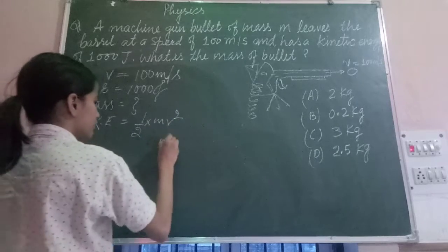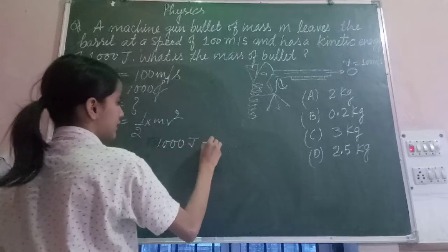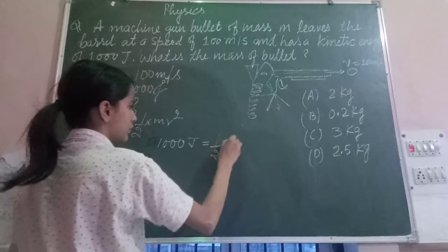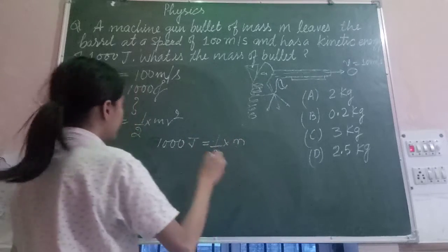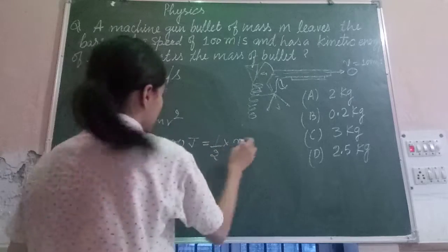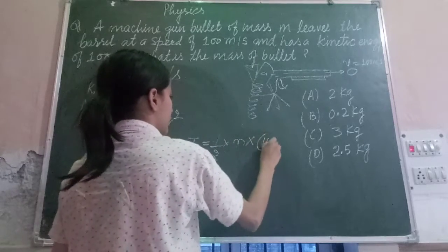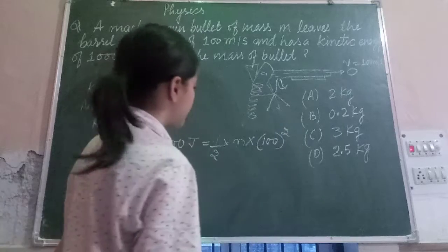1000 joules is equal to 1 upon 2 into m into 100 squared. Let mass be m.